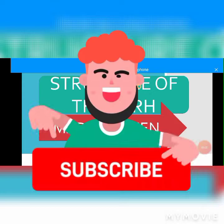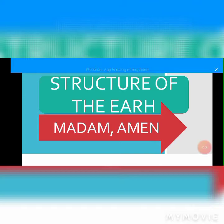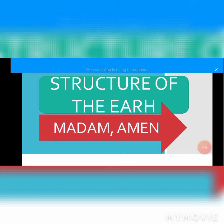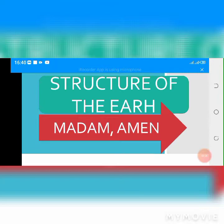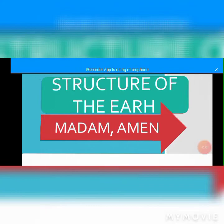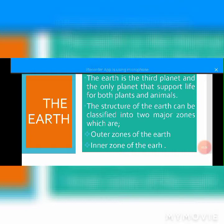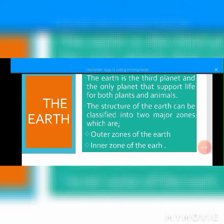Welcome to the C-Academy TV. Today we are continuing with another subject which is called geography, especially the structure of the earth. Before explaining the internal structure of the earth, let us proceed with a general view of the structure of the earth. The earth is the third planet and the only planet that supports life for both plants and animals. The structure of the earth can be classified into two major zones: the outer zone of the earth and the inner zone of the earth.